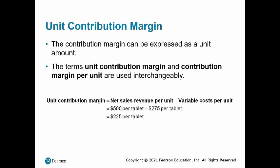However, contribution margin can also be expressed as a unit amount. The terms unit contribution margin and contribution margin per unit are often used interchangeably. Using our Smart Touch Learning example, the net sales revenue per unit is $500 and the variable cost per unit is $275. Subtracting $275 from $500 gives a unit contribution margin of $225 per tablet.